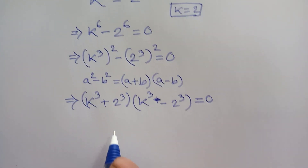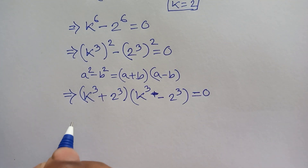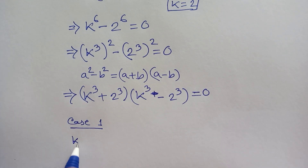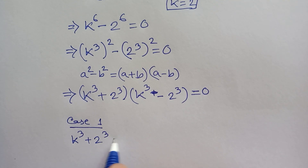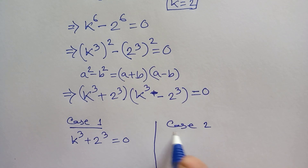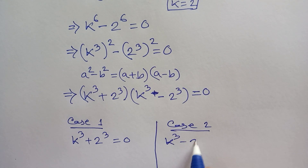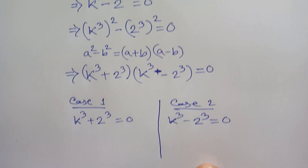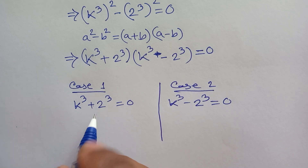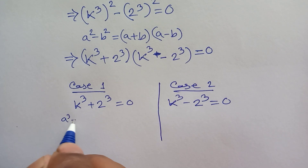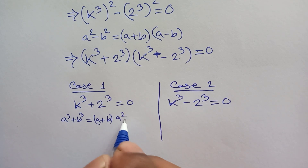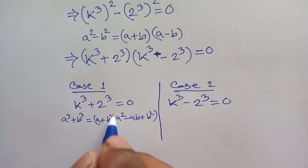Here we have two cases. Case 1: k cubed plus 2 cubed is equal to 0. Case 2: k cubed minus 2 cubed is equal to 0. For Case 1, we apply the a cubed plus b cubed formula: a cubed plus b cubed equals a plus b, times a squared minus ab plus b squared.